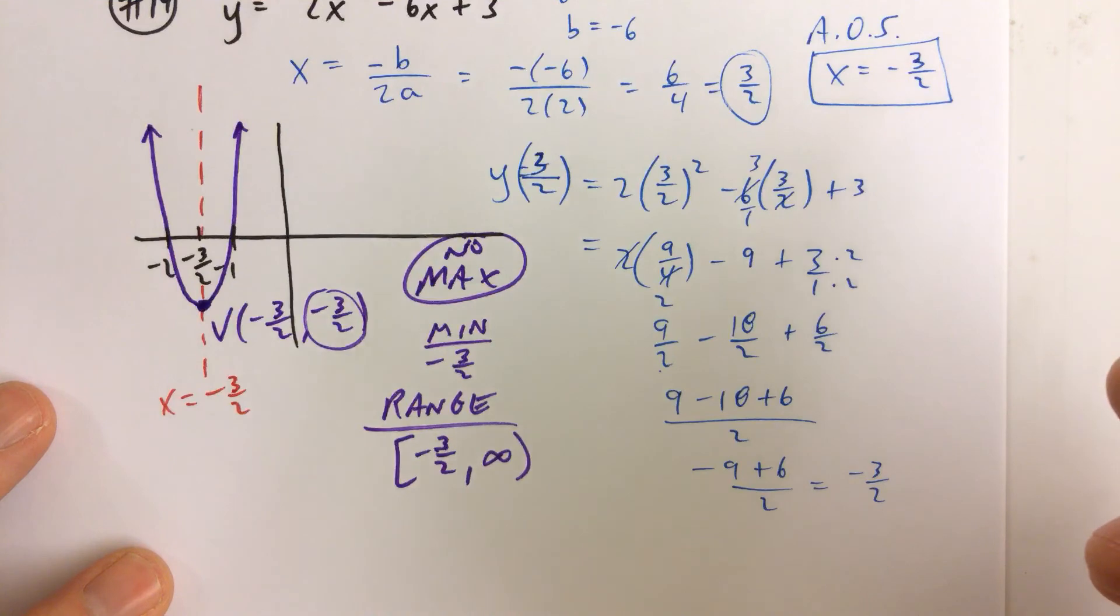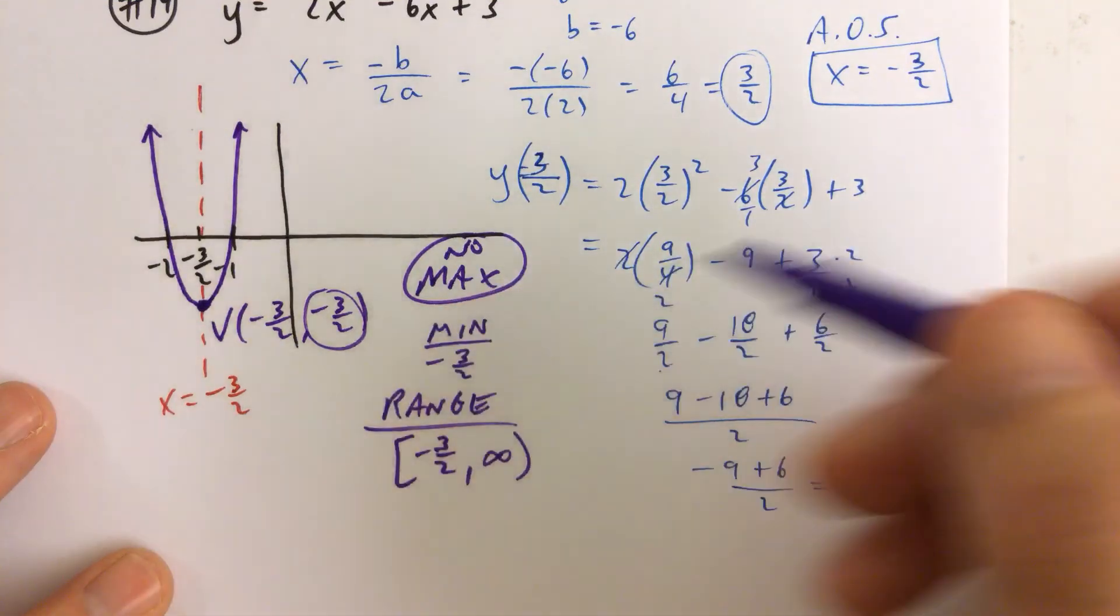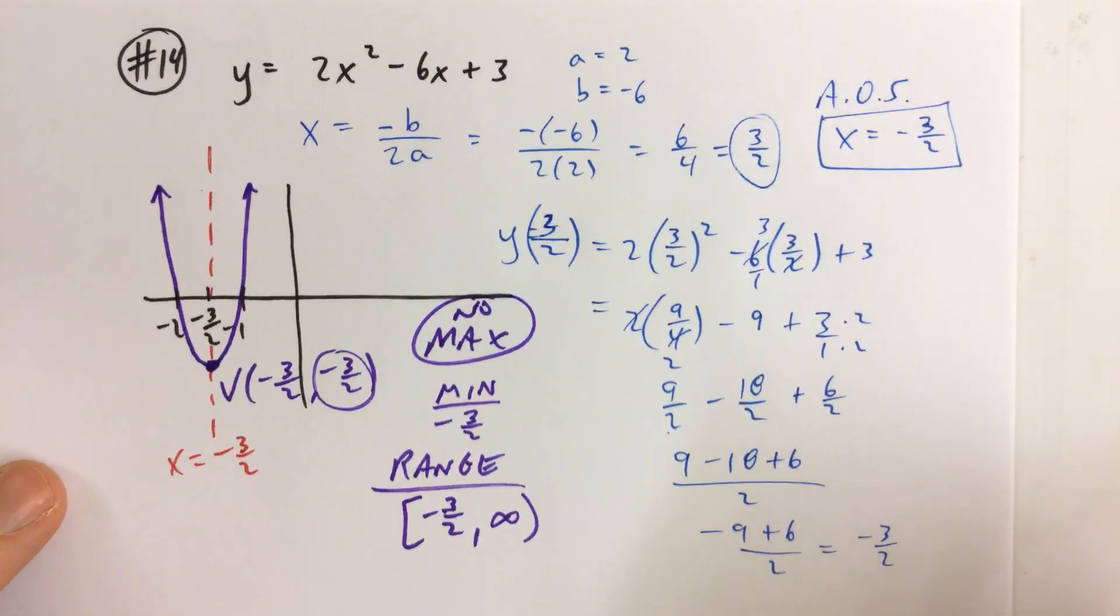And I think that's it. Yeah, max, min, range, axis of symmetry. We got that and we got the vertex. So that's it for number 14.